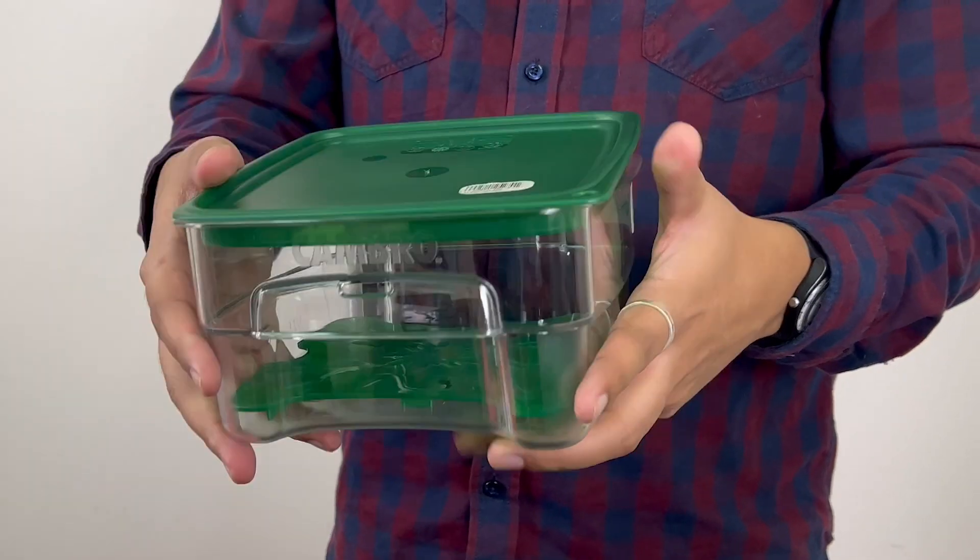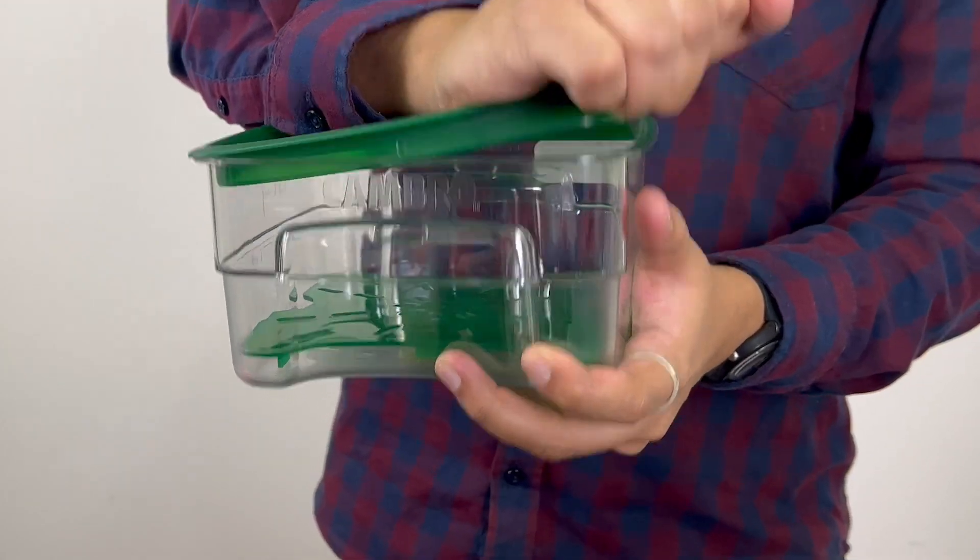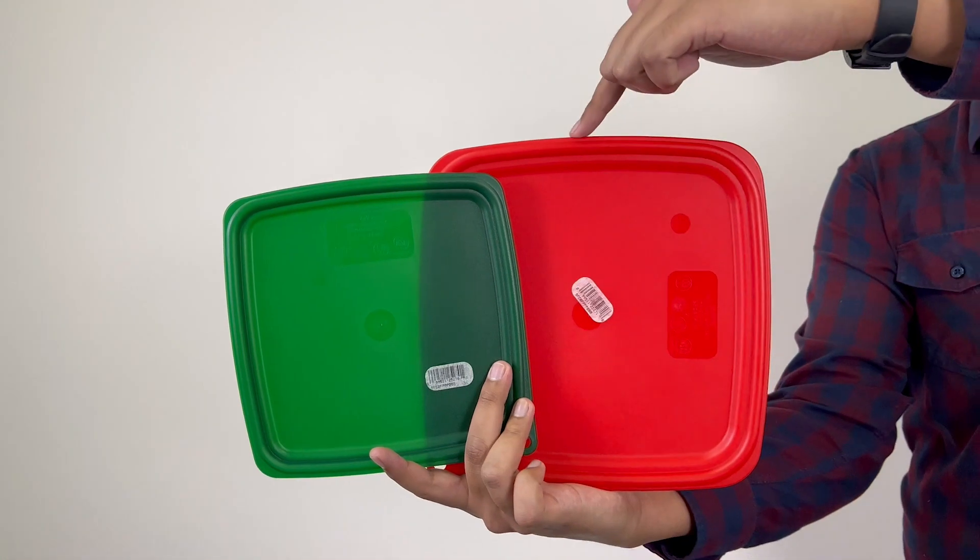And last but not least, the KamSquare Fresh Pro Food Container Cover. This easy seal cover is designed to come off in a pinch and go back on in a snap, which means you can quickly cover and uncover your food with minimal effort.